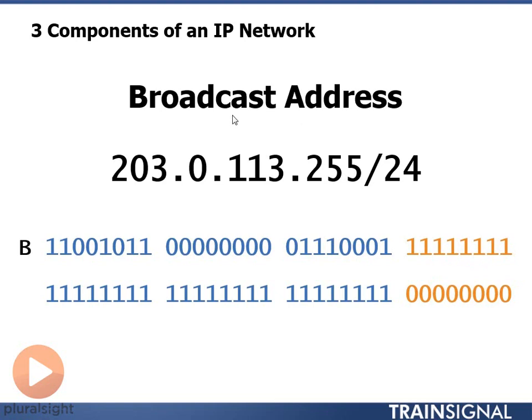The broadcast address is automatically the very last address available in a network. The network address is the first address in the network, and the broadcast address is the last address in the network.